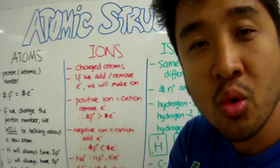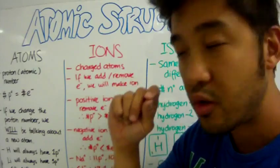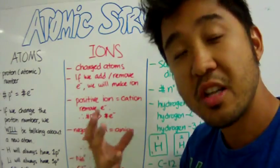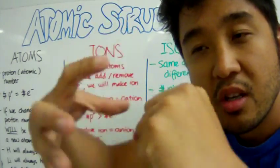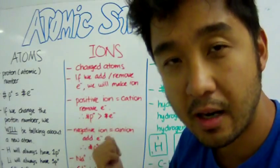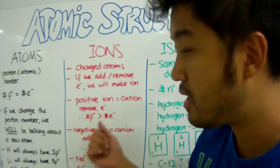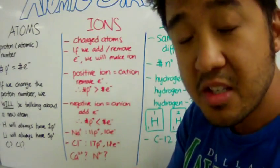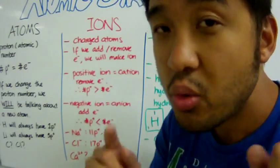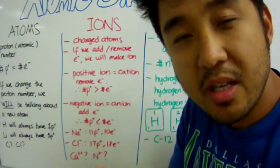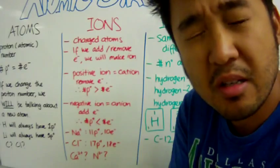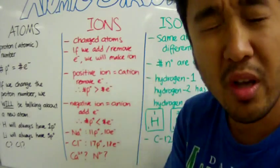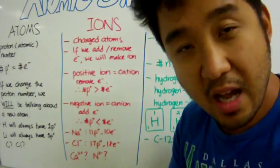Positive ions happen when we remove electrons. When you remove electrons, you will end up having more protons than electrons. Because protons have a positive charge and electrons have a negative charge, when you have more positive than negative, you will have a positively charged ion called a cation. The second type of ion are called negative ions, and they're called anions. Anions happen when we add electrons to atoms. When we add electrons to atoms, you end up having more electrons — more negative charge particles — compared to protons, which are the positively charged subatomic particles. When you have more electrons than protons, that new ion is now an anion.